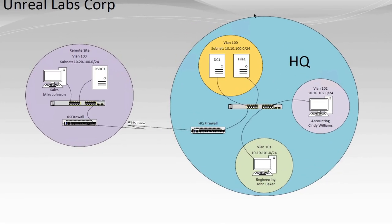Here's the Visio of the future Unreal Labs Corporation. As you can see, we have our HQ site and then we have a remote site eventually. Today we're just going to be dealing with DC1 and the Cisco switch. In the future, we're going to have multiple VLANs, the IPSec tunnel, a remote domain controller, remote sales guy, remote switching, and possibly some dynamic routing between the IPSec tunnel.